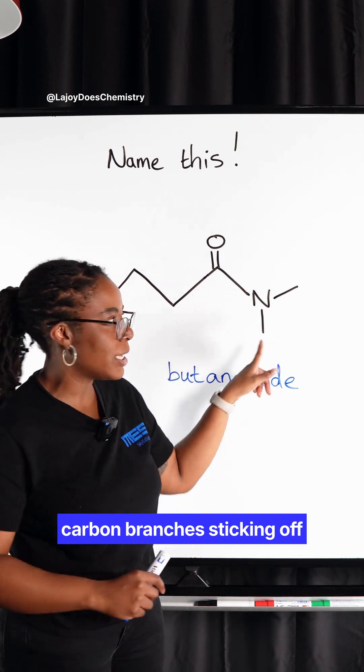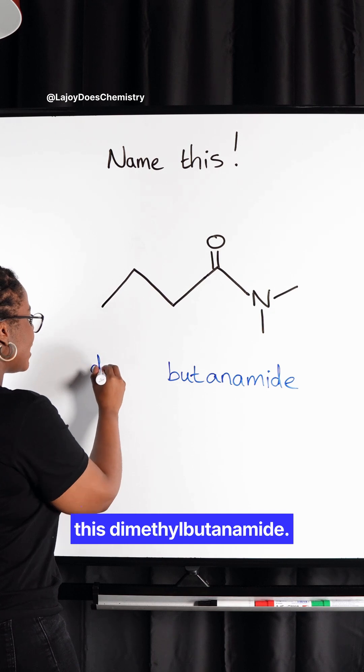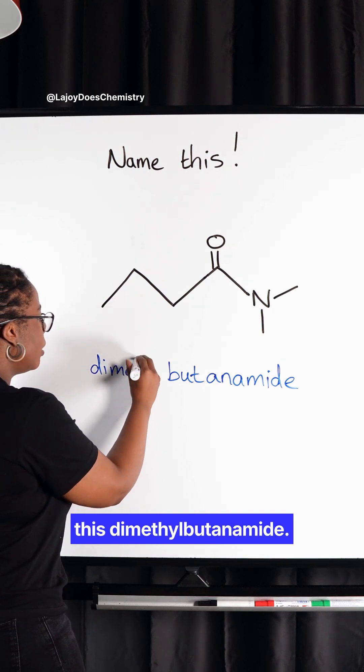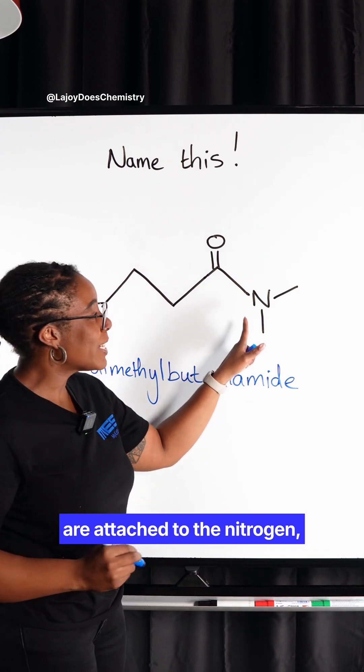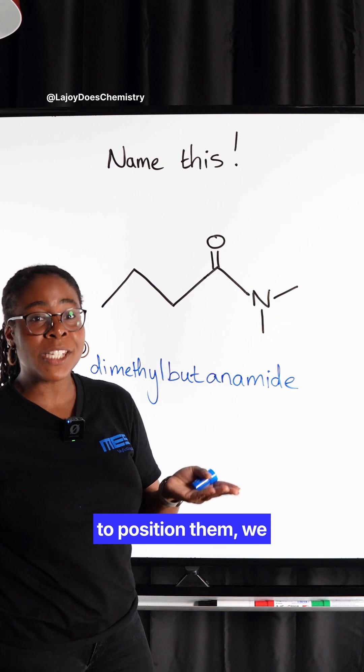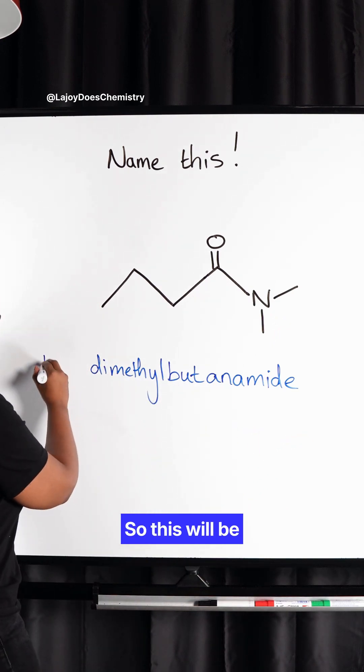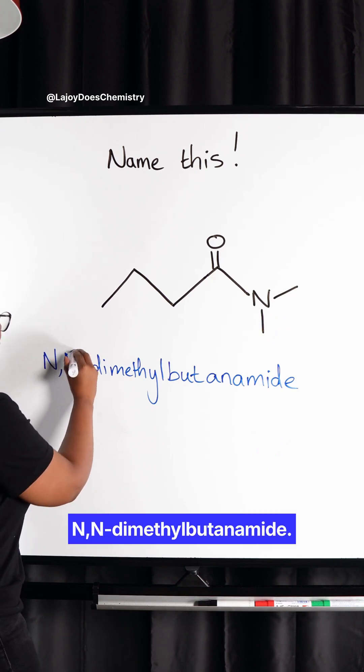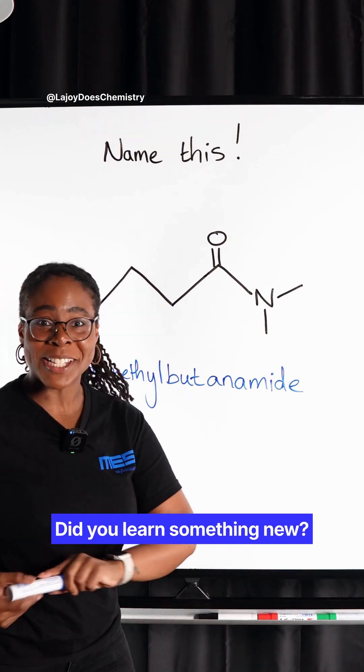Because we've got those two methyl groups, this makes this dimethyl butanamide. And because those methyl groups are attached to the nitrogen, to position them we don't give them a number. Instead we position them with the letter N, so this will be N,N-dimethyl butanamide.